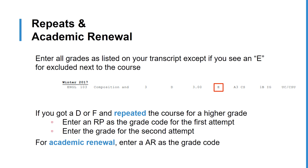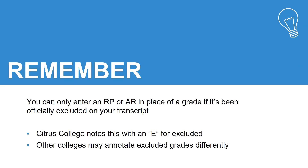For classes you repeated, enter RP in the first attempt. In the second attempt, you'll enter your passing letter grade. For classes you completed academic renewal on, enter AR instead of the D or F. Remember, you can only enter an RP or an AR in the place of a grade if it's been officially excluded on your Citrus College transcript, which is noted by an E next to the course.